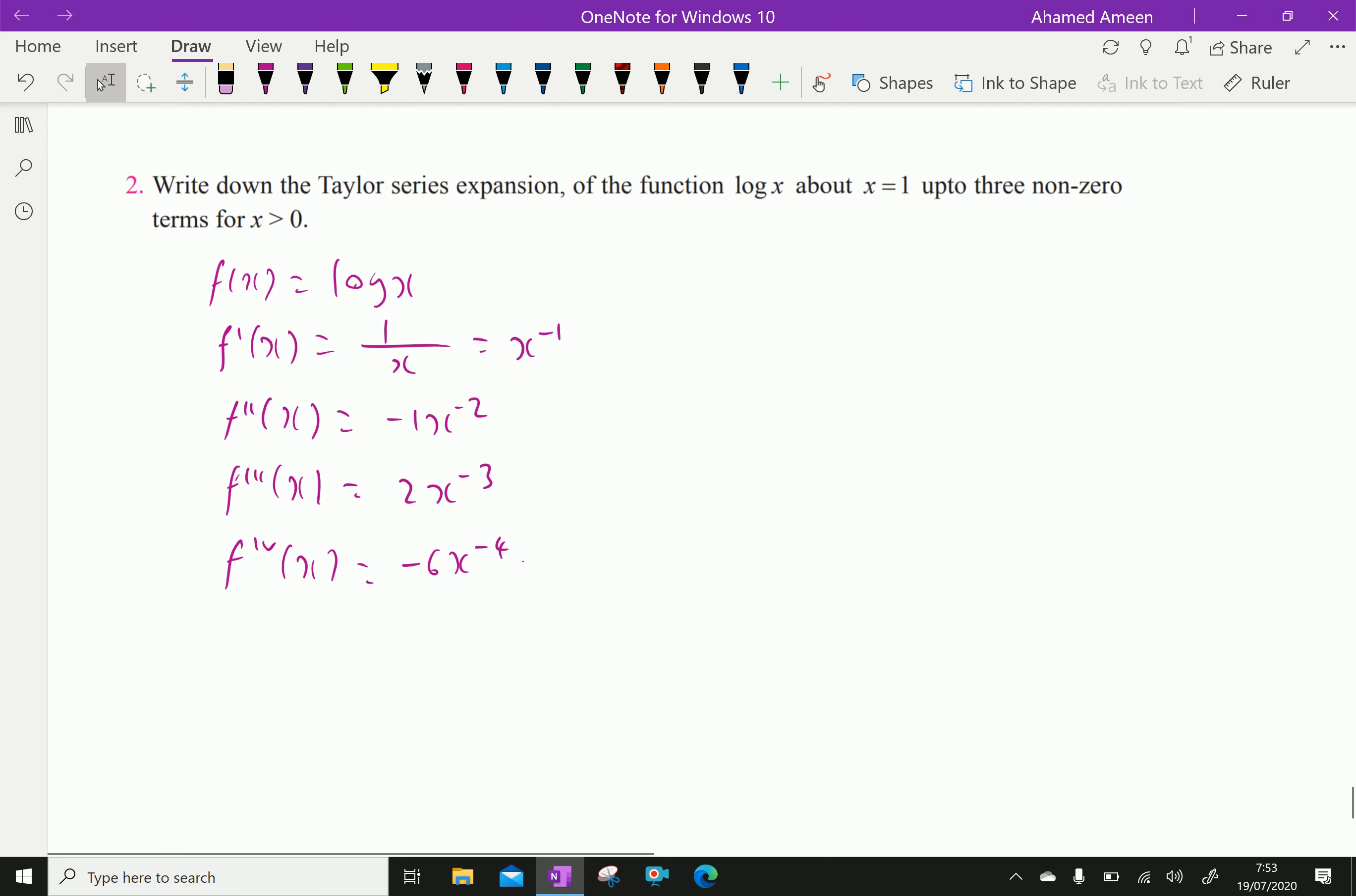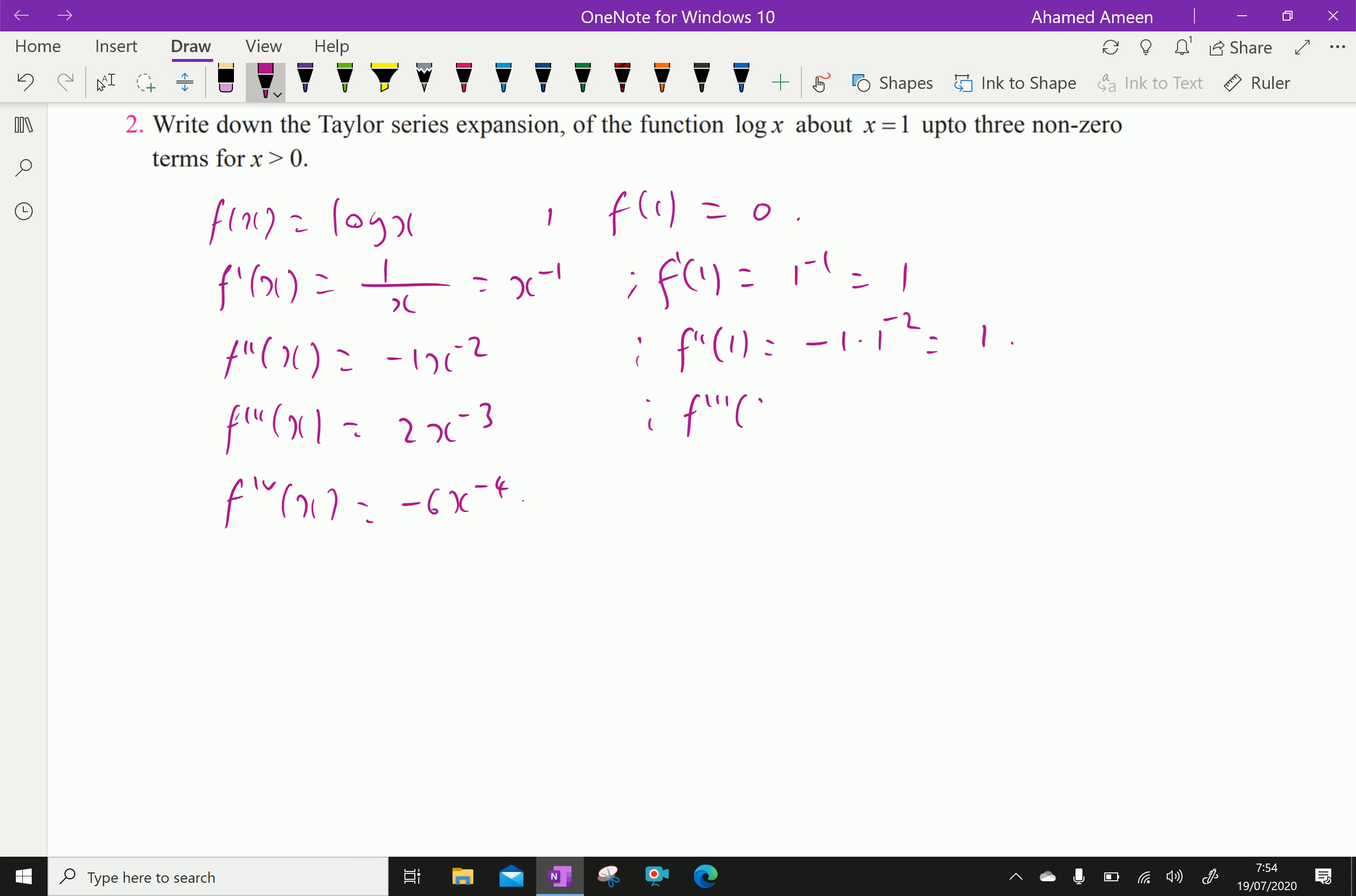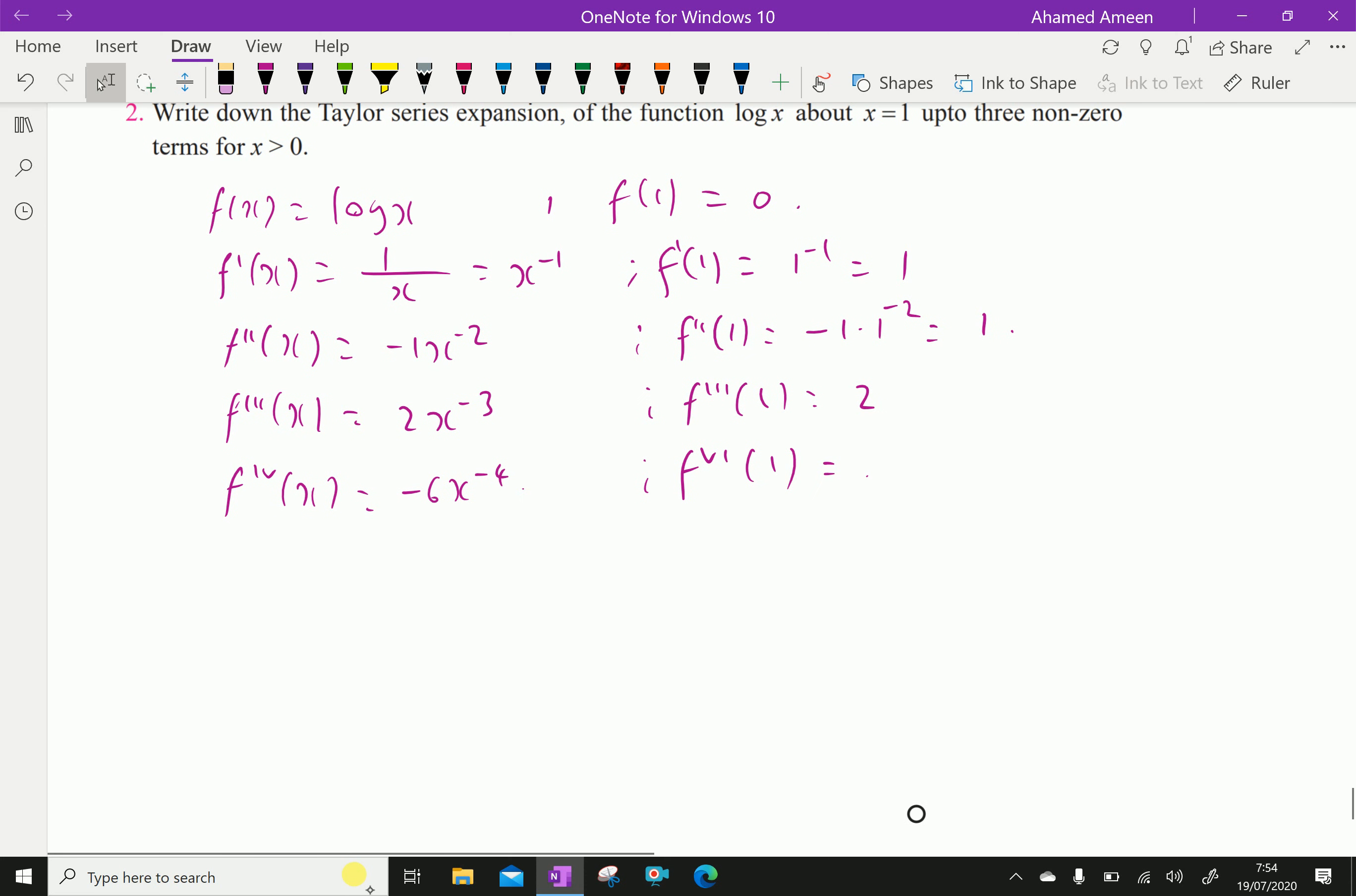Then here, f(1) equals log 1 equals 0. f'(1) is 1 because 1^(-1) equals 1. f''(1) is -1 times 1^(-2) which also equals -1. f'''(1) is 2 times 1 equals 2. f^(4)(1) equals -6.